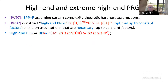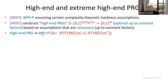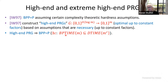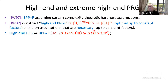If you have a high-end pseudo-random generator, then BPP equals P — in other words, there exists a constant C such that every randomized algorithm running in time M can be simulated in deterministic time M to the C. This is great.